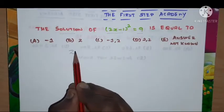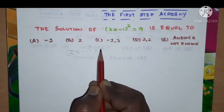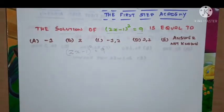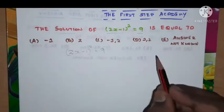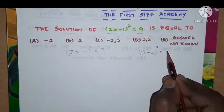We'll take and write the given problem as (2x-1)² which is equal to 9. Now we need to recall one algebraic formula that is called (a-b)² which is equal